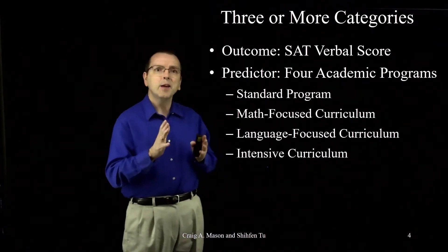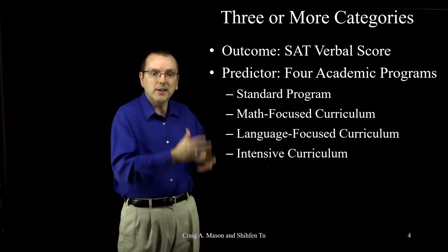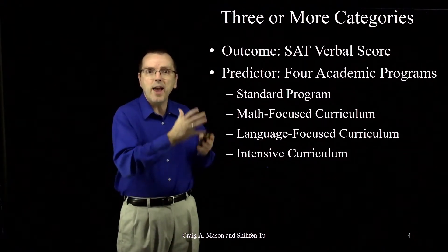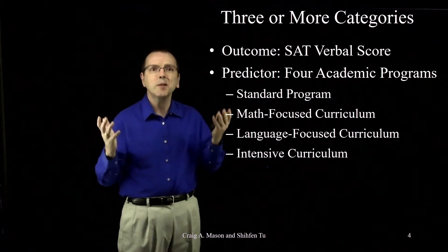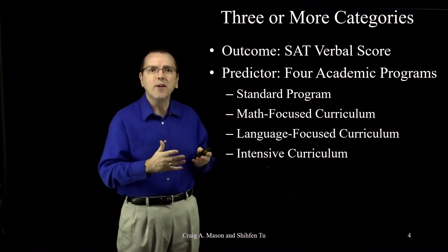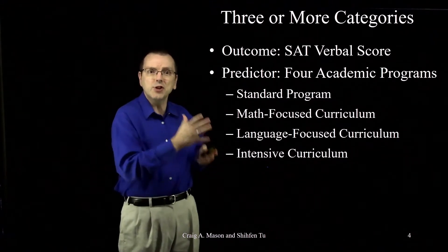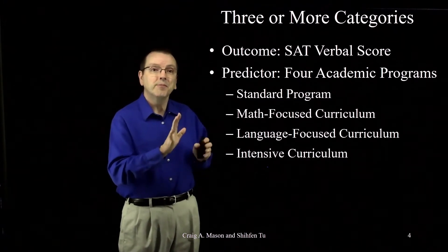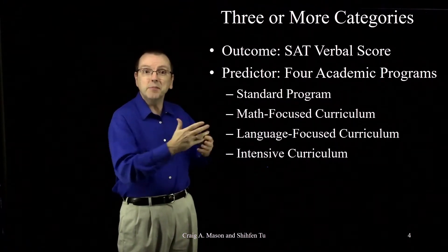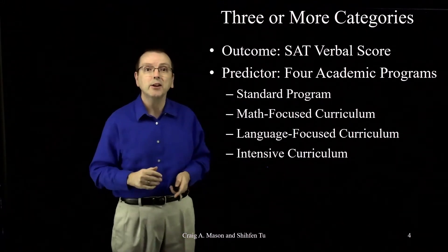Notice that academic program is a categorical variable. These groups don't reflect any different scores across the number line. There's no inherent order or values for any of these. They're just four distinct groups or categories. I've made some simulated data for this example based on these groups.